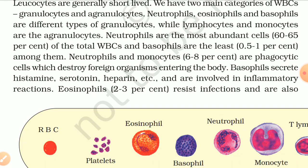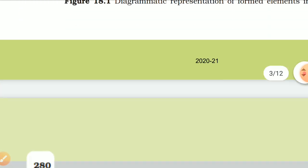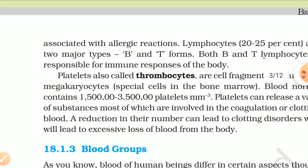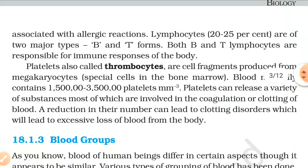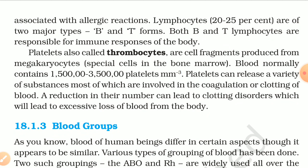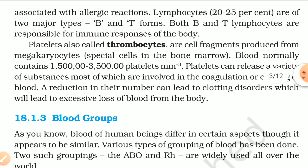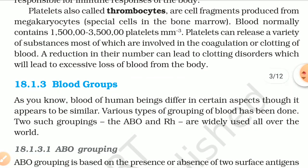Eosinophils (2–3%) resist infections and are also associated with allergic reactions. Lymphocytes (20–25%) are of two major types, B and T forms, both responsible for immune responses. Platelets, also called thrombocytes, are cell fragments produced from megakaryocytes — special cells of the bone marrow. Blood normally contains 150,000 to 350,000 platelets per cubic millimetre. A reduction in their number can lead to clotting disorders and excessive loss of blood from the body.